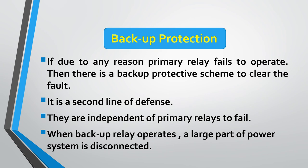Just as in daily life we have a primary plan and a backup plan, in a power system we also have a second line of defense. If the primary relay fails to operate, the backup protective scheme clears the fault. Backup protection is independent of the primary relay and uses different sensing elements. When the backup relay operates, a larger part of the power system is disconnected compared to primary protection.